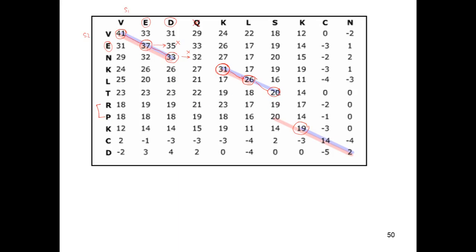From 20, we reach 19 by skipping these two rows. The next biggest value is 14, and then finally 2. That is how you perform your traceback alignment.